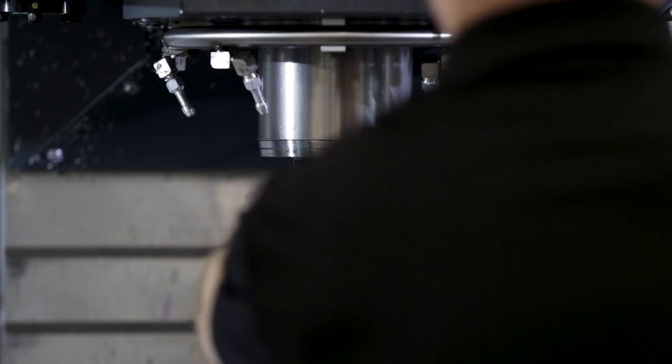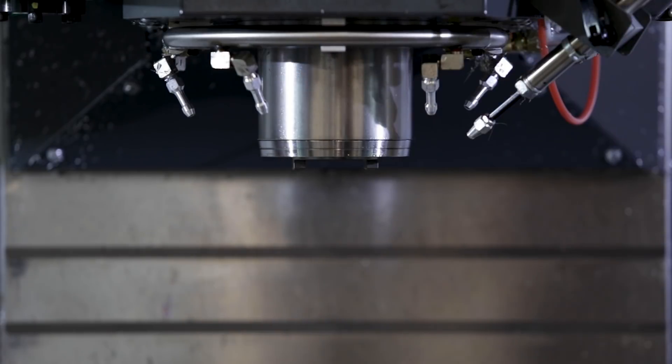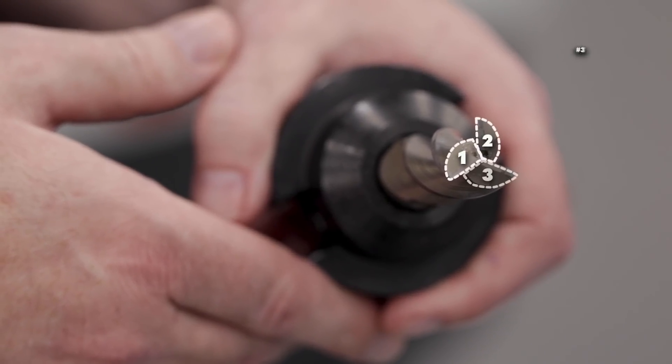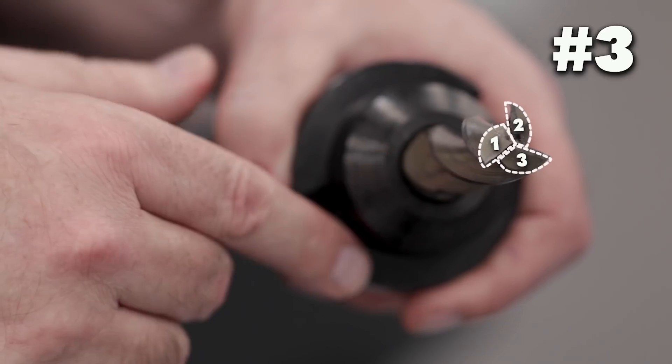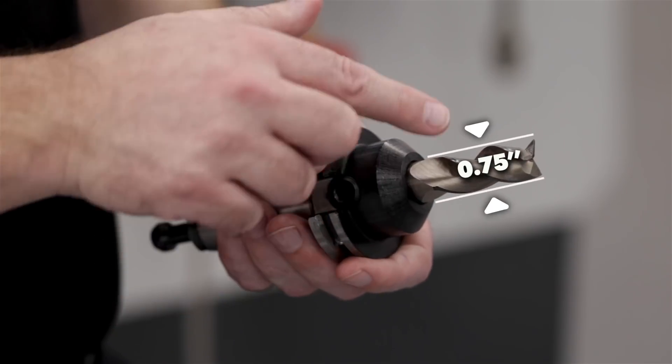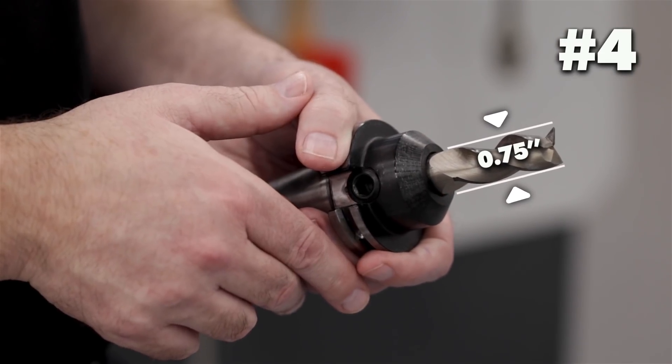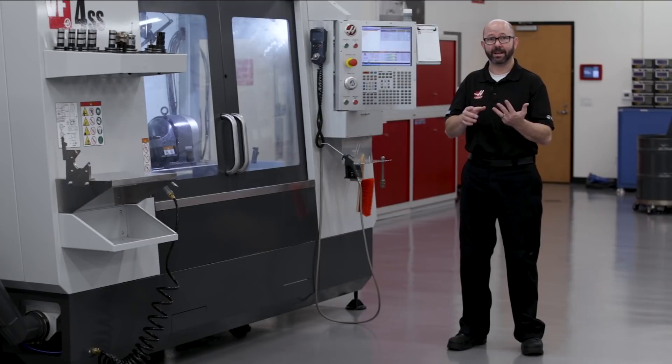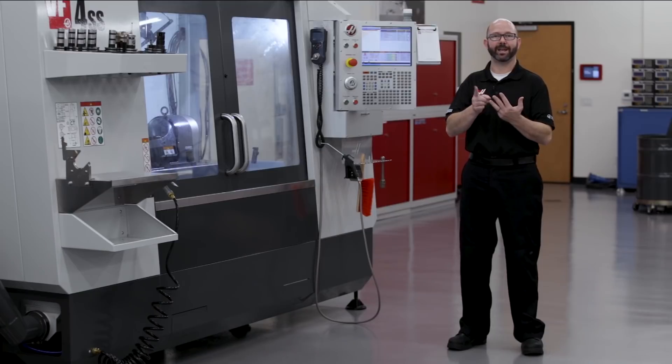Next, it needs some information about the tool that's in our spindle. It needs to know how many flutes that tool has. That's our number three. And it has to know that tool's diameter. That's number four. But it doesn't have that information. We've got to tell the control how many flutes and the tool diameter.